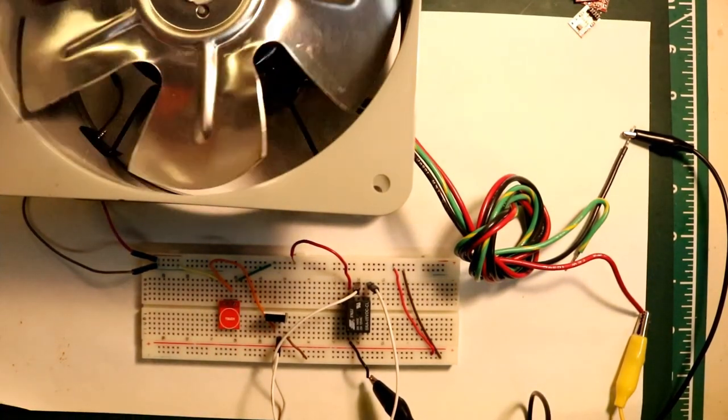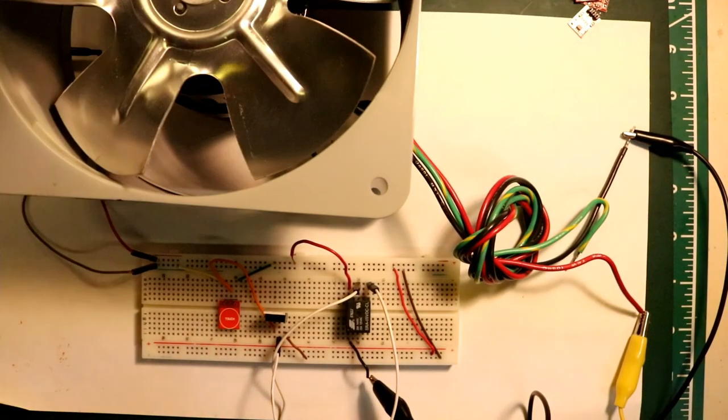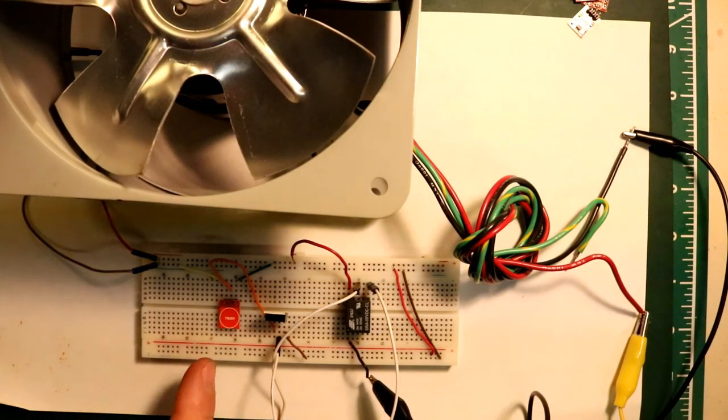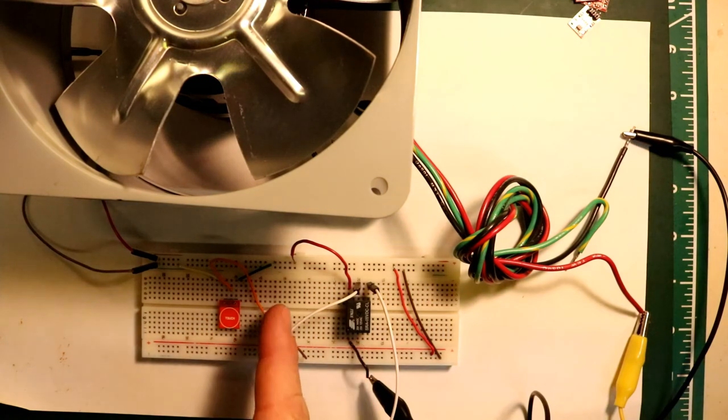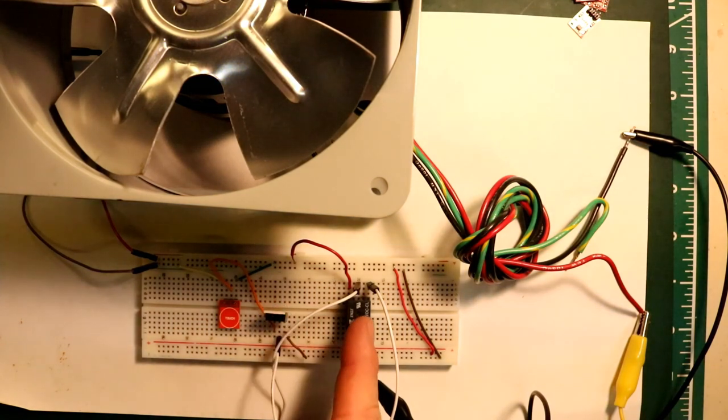You can see that this high current fan can be controlled by just this tiny little capacitive touch switch by switching up through these components here: this NPN MOSFET and this relay. That's really it. I just wanted to show that we can control anything and not just an LED.